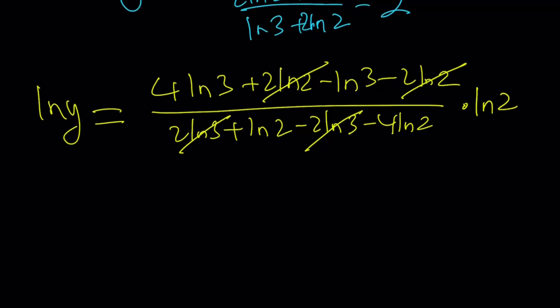These are going to cancel out. Awesome. So we're going to get something real cool. We're going to have 3 ln 3 divided by negative 3 ln 2, multiply by ln 2, and that is equal to ln y.